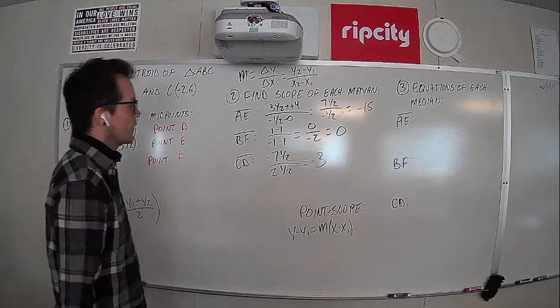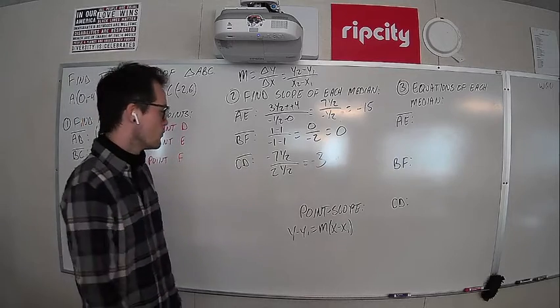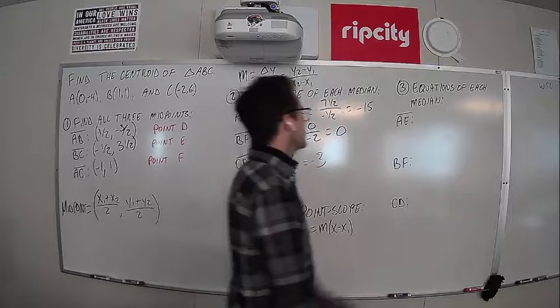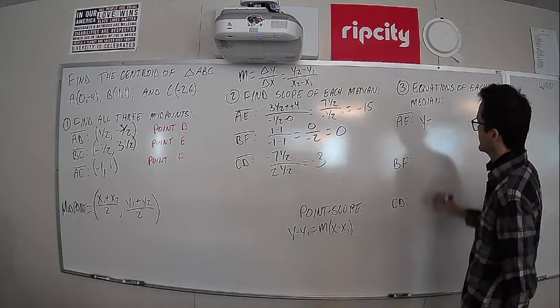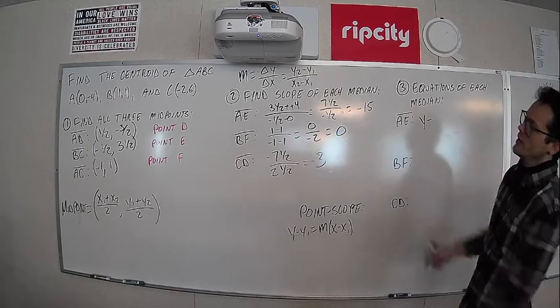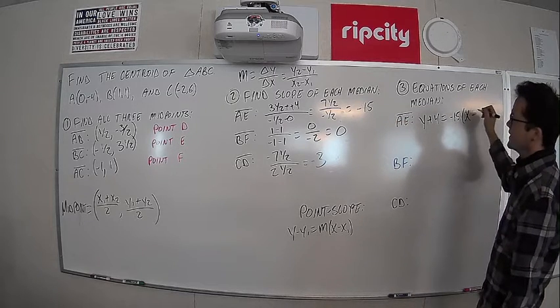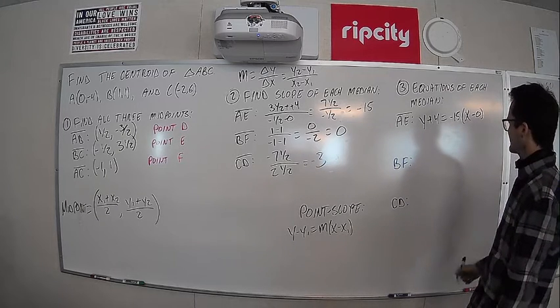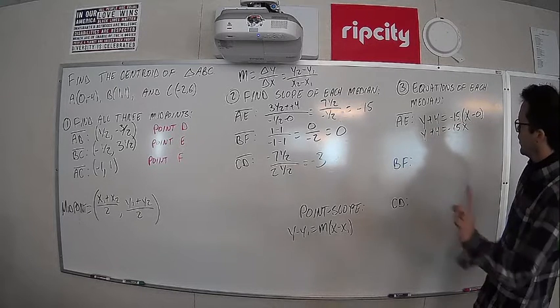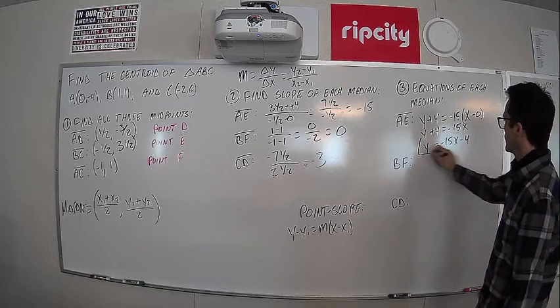Okay. Next, equations of each median. We're going to throw them into point slope form. This part is, there's no real math happening here. We're not going to do any calculating. It's just plugging pieces in the right spots. We have each of our slopes, boom, boom, and boom. We have each of our points, boom, boom, and boom. So let's carefully plug in the pieces. Y minus Y1. So this is A, E. We're utilizing the vertex A, which is at 0, negative 4. The Y coordinate is negative 4. So we're going to have Y plus 4 equals this slope times X minus 0. And we can simplify this thing. Y plus 4 equals negative 15X. Take it one step further. Subtract 4 from both sides. Y equals negative 15X minus 4. So here is our first equation.